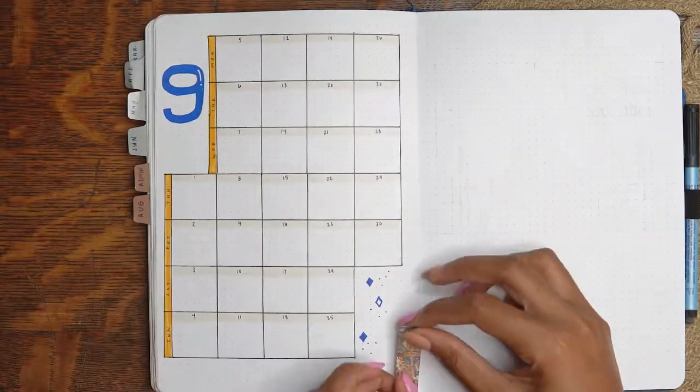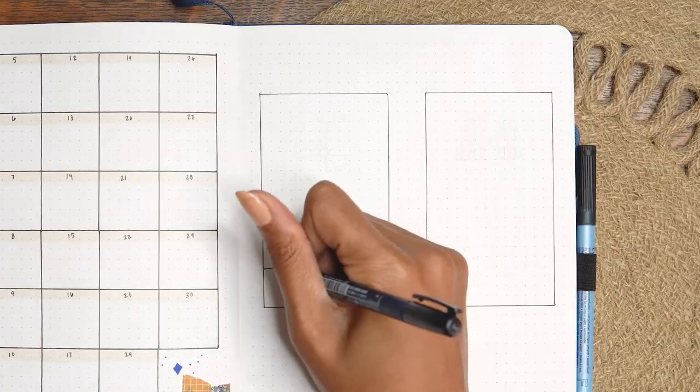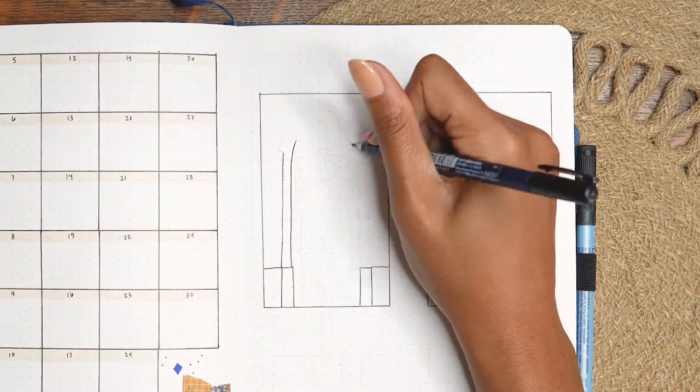Let me know in the comments if you've tried this or if you're curious. I just want to know what your monthly calendar situation is.